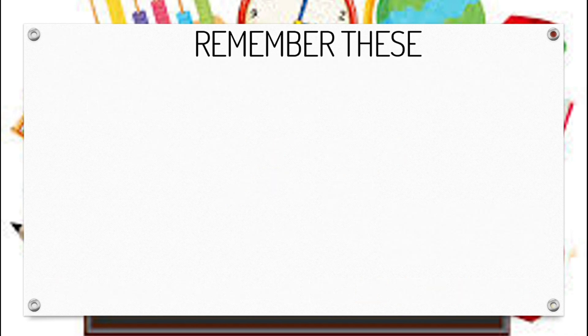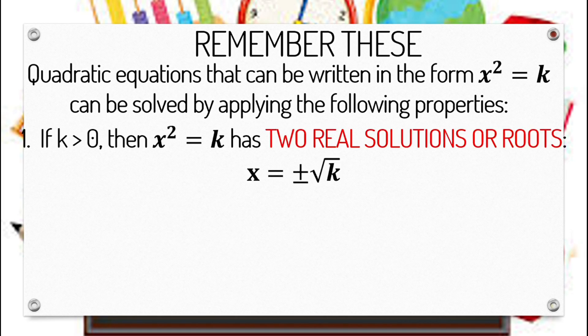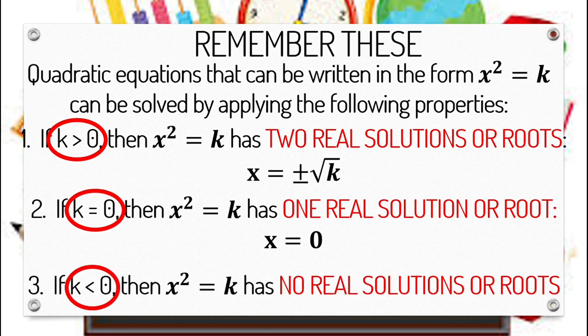Let's bear in mind the significant ideas. Quadratic equations in the form x squared equals k can be solved by applying the following properties: First, if k is greater than 0, then x squared equals k has two real solutions, x equals positive negative square root of k. Second, if k is equal to 0, then x squared equals k has one real solution, x equals 0. Third, if k is less than 0, then x squared equals k has no real solutions or roots.